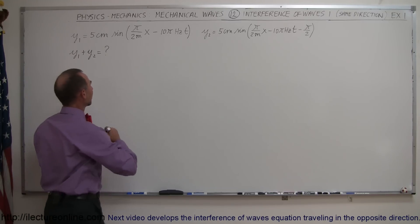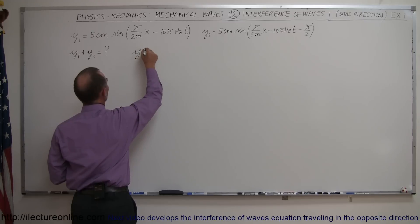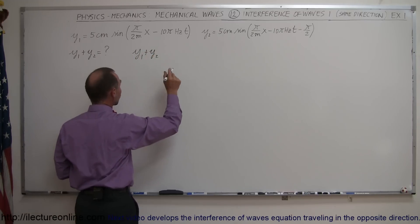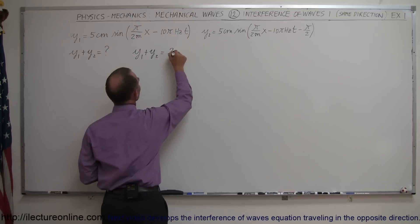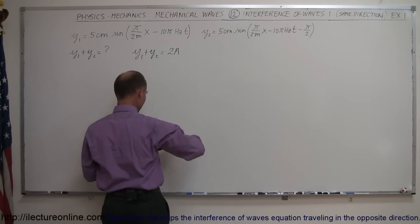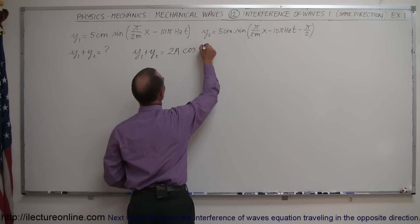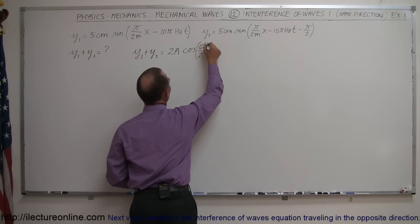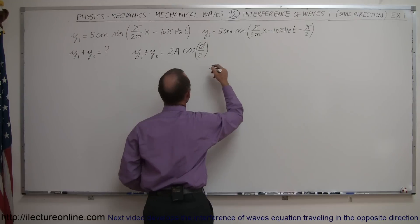Well we need to remember that equation that says y1 plus y2 under those circumstances is equal to twice the amplitude times the, and I guess we'll write the cosine first, times the cosine of phi over 2, so that would be half the phase shift of one wave compared to the next.